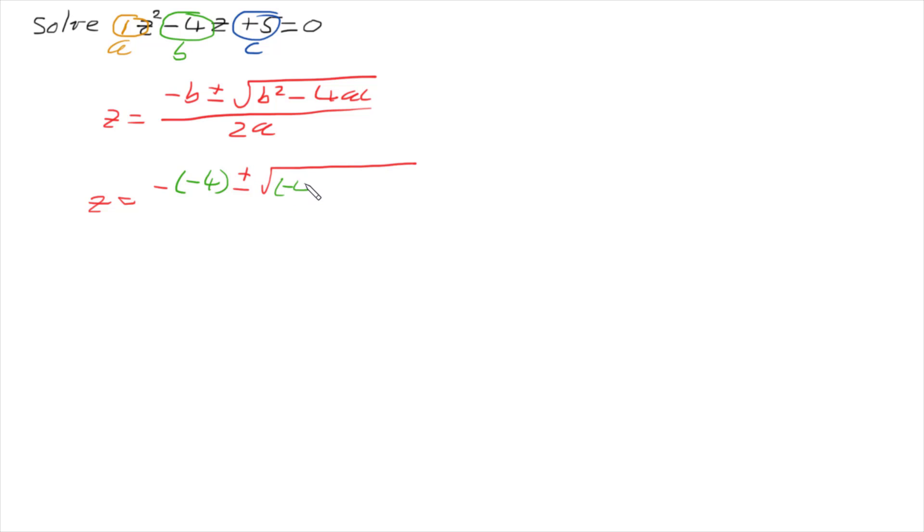So negative 4 squared minus 4 times by whatever a is, which is 1 times by whatever c is, which is 5.